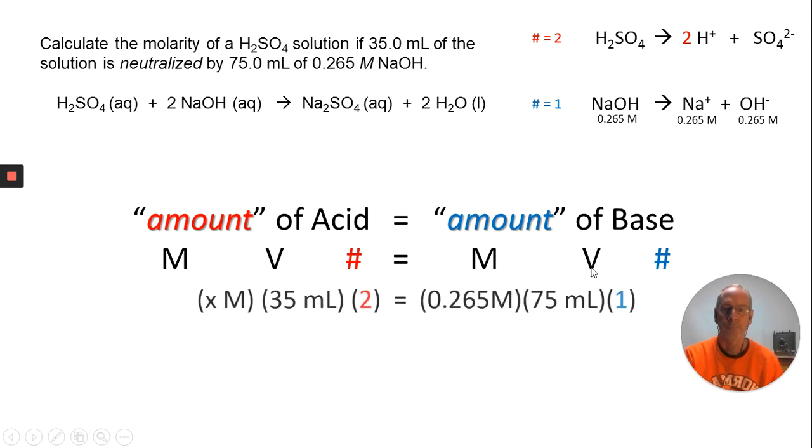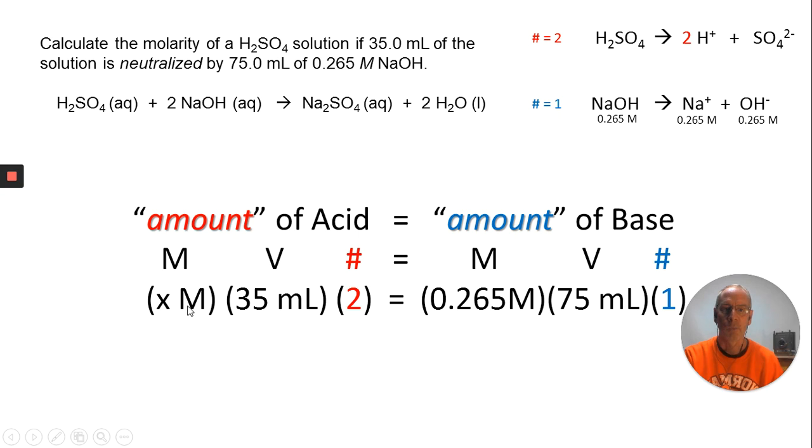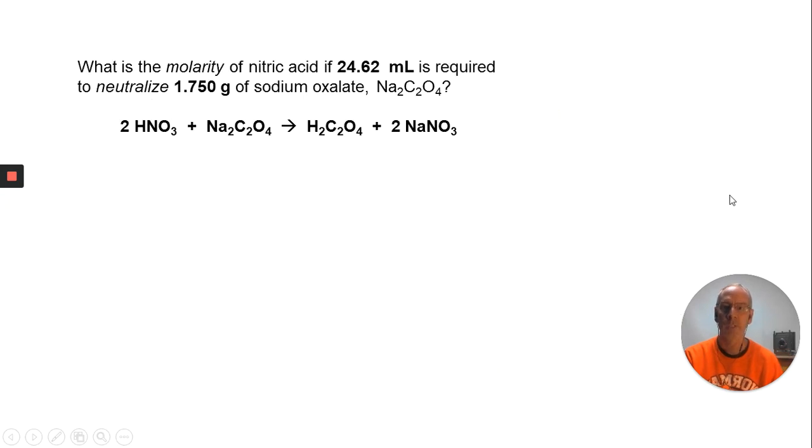If the NaOH is 0.265, the OH is 0.265, so the number is 1. Let's plug in the numbers. I don't know the molarity of the acid, that's my unknown. I know it took 35 mL, and the number associated with sulfuric acid is 2. For the base, it's 0.265 M, and I used 75 mL of it, and the number is 1. When I solve that, I get 0.2839 M sulfuric acid. I'm hoping these look a little more straightforward now that you've seen a few more worked out.